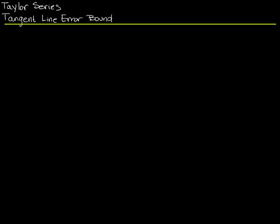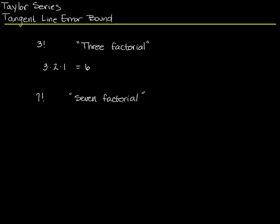Before we go on, I promised I would describe the notation. When we see an exclamation point — for example 3! — we say '3 factorial.' All that means is you start with the 3 and multiply it by every natural number below it, stopping at 1 (not 0). You can compute it: 3 factorial is just 6. The reason factorial notation is handy is that it lets us describe very large numbers compactly. For example, 7 factorial is 7 times 6 times 5 times 4 times 3 times 2 times 1, which equals 5,040.